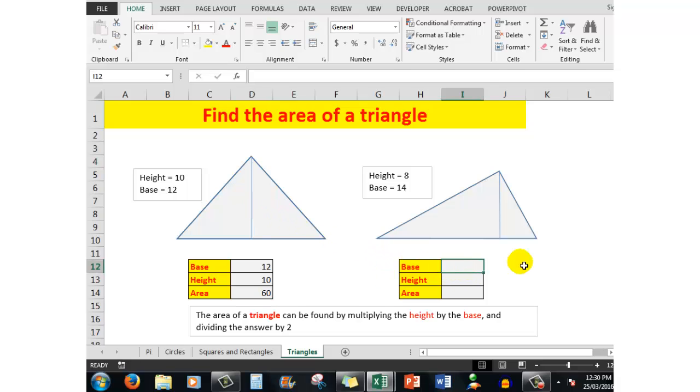Here's another one where the base is 14 and the height is 8. You'll notice that this is an irregular triangle, but in both triangles the height has been measured from the apex of the triangle, the top peak, down to the base with a straight line, a 90 degree straight line. The area will be equal to that multiplied by that and divided by 2, so the area of that triangle is 56.